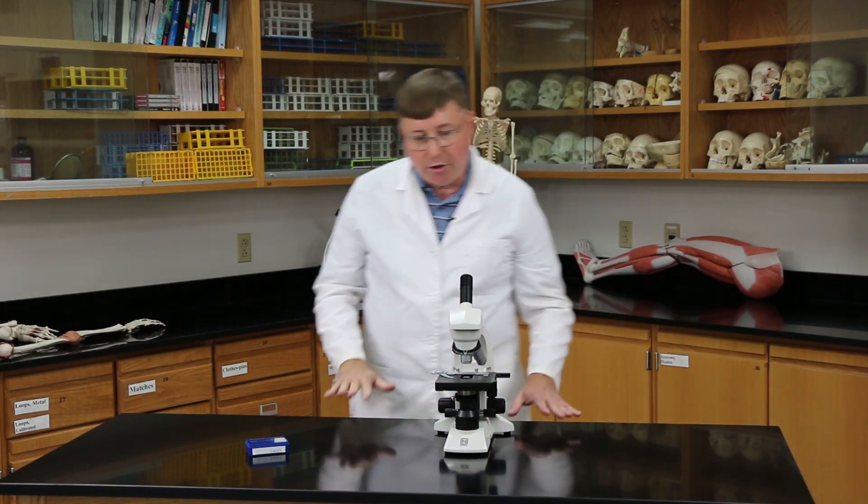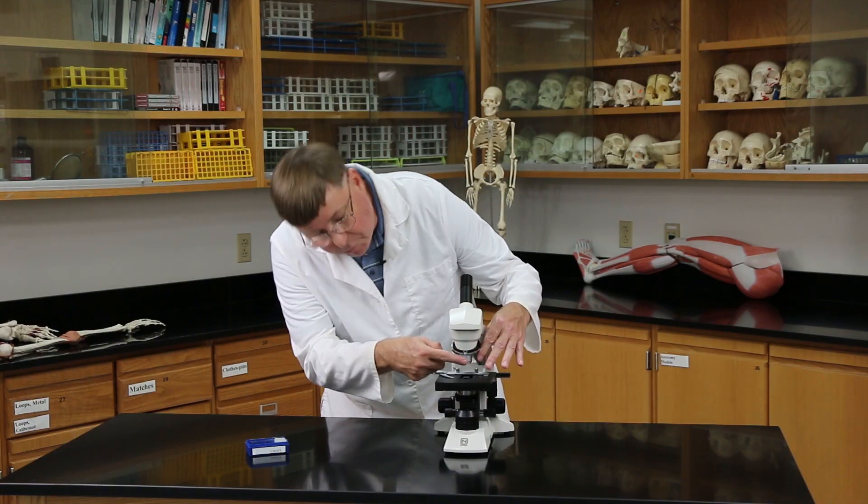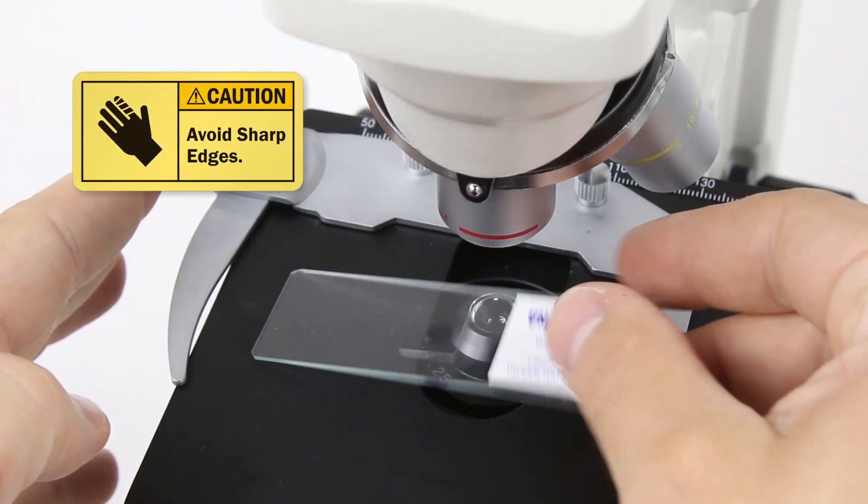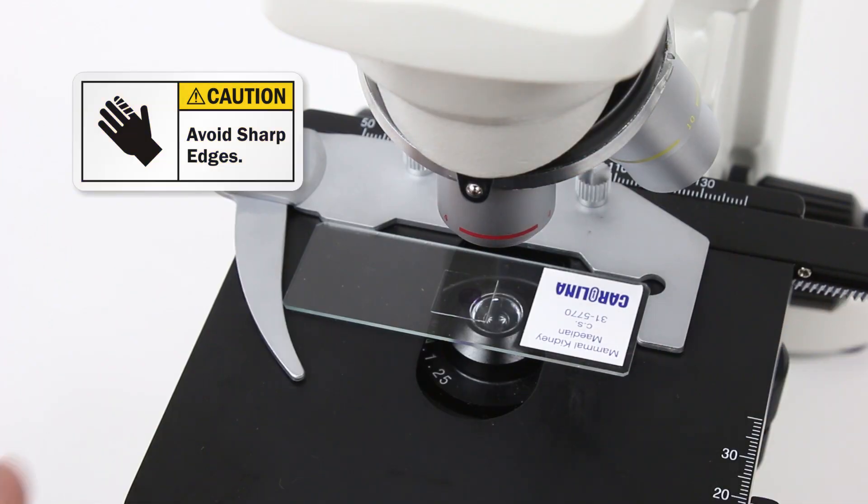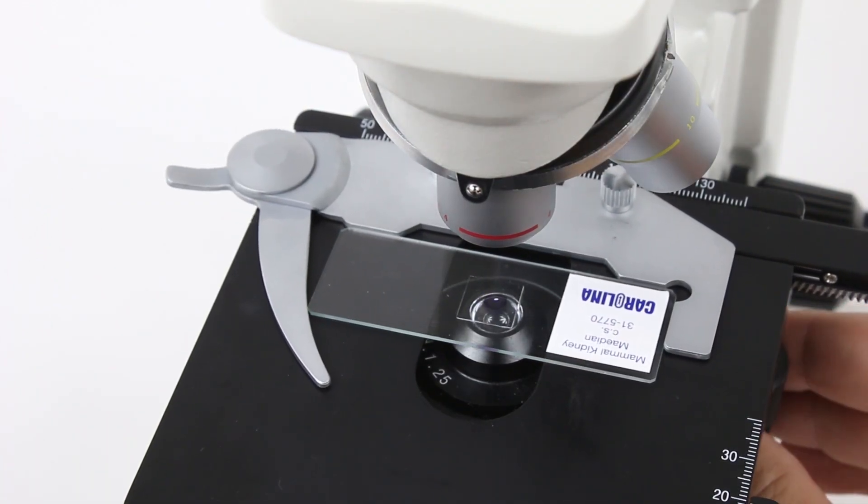Now, how about putting a slide on the microscope. So what I'm going to do is I'm going to make sure that I'm on the scanning lens. That's the red one over here. And I'm going to get a slide. And I'm going to pull back the stage clip and gently slide that slide into place.